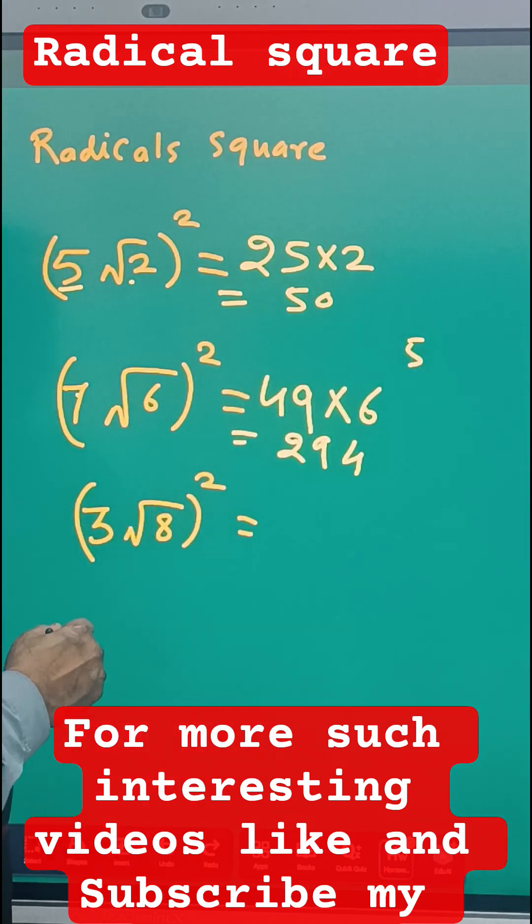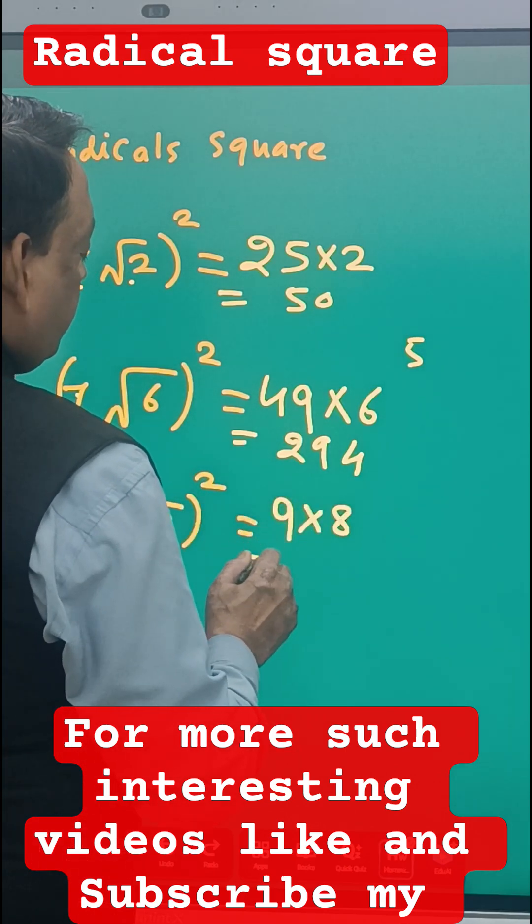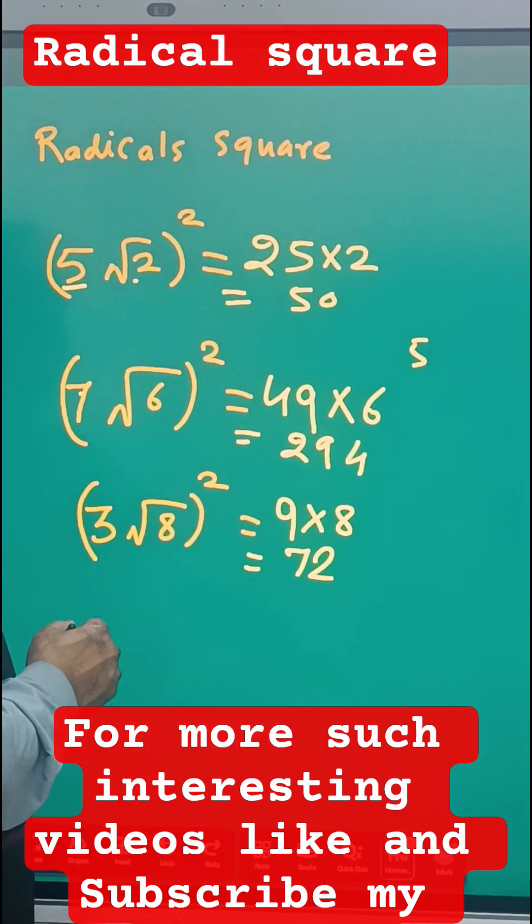Same way, if it is given 3 root 8, so 3 ka square 9, and the root 8 ka square is 8. So 9, 8 a 72. Okay, so this will be to find the square of radical number.